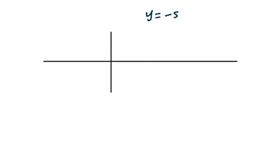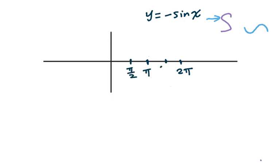For y equals negative sine x, think about the sine shape, then push it down and you will get this graph. We still label two pi, here's pi, pi over two, then half again three pi over two. We got one and negative one. Then find five points and connect them. That's the graph for negative sine x.